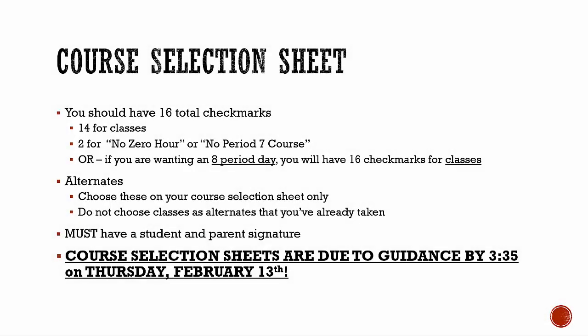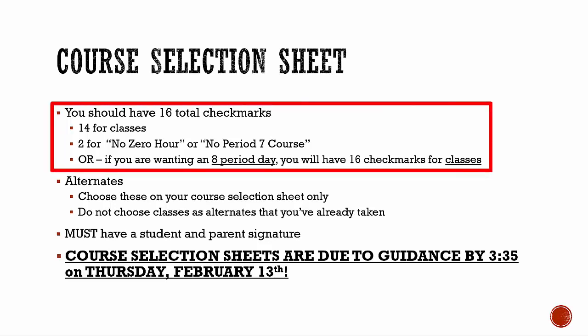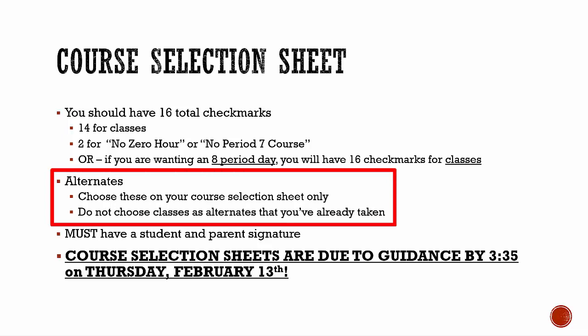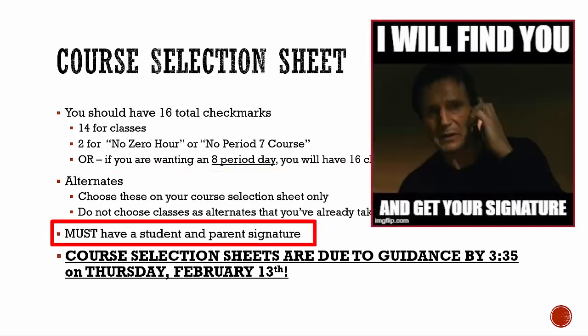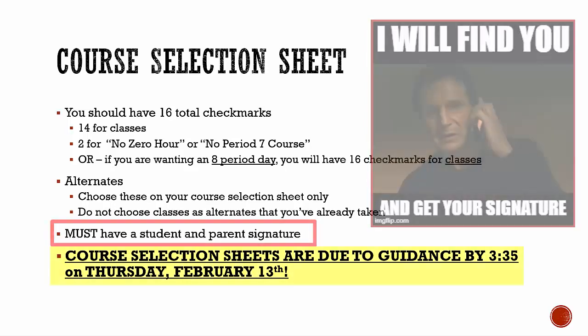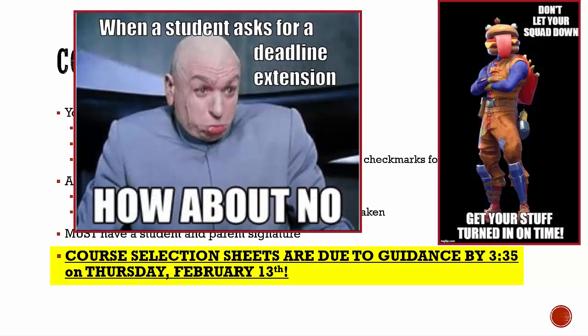Once your senior year course selection sheet has been filled out with your required and elective class selections, you should have a total of 16 checkmarks — 14 for classes and 2 for either no zero hour course or no period 7 course. Or, if you are wanting an 8-period day, you will have 16 checkmarks for classes and would not mark anything for no zero hour course or no period 7 course — just leave those blank. Make sure you have some alternate courses chosen on the back of your course selection sheet, and make sure your course selection sheet is signed by a parent. Remember, this sheet is due by 3:35 on Thursday, February 13th.